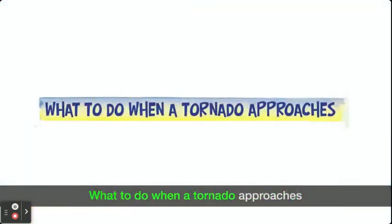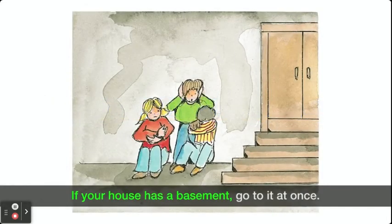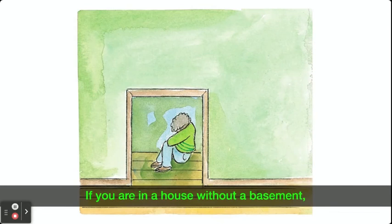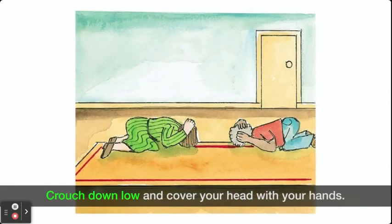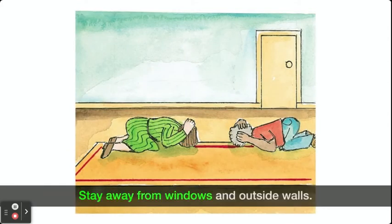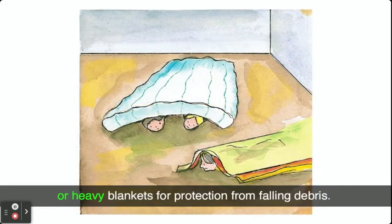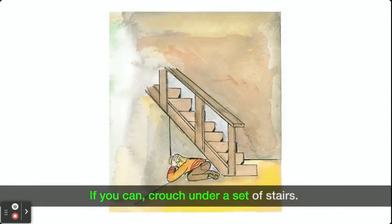What to do when a tornado approaches: If your house has a basement, go to it at once. If you are in a house without a basement, go to an interior closet or bathroom far from the outside walls. Crouch down low and cover your head with your hands. Stay away from windows and outside walls. Try to cover yourself with a mattress or heavy blankets for protection from falling debris. If you can, crouch under a set of stairs.